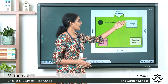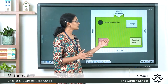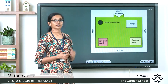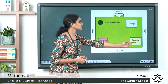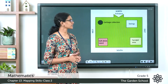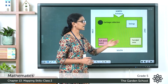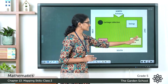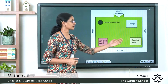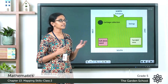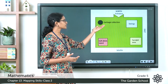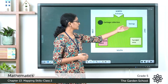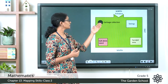The swings and the sandpit area are located towards the east with respect to the entrance of the park. The soft drink stand is located towards the west with respect to the sandpit area. So with respect to the entrance gate, the swings and sandpit area are at the east, and with respect to the sandpit area the soft drink stand is located towards west. With respect to the swings, the garbage collection bin is located to the west.